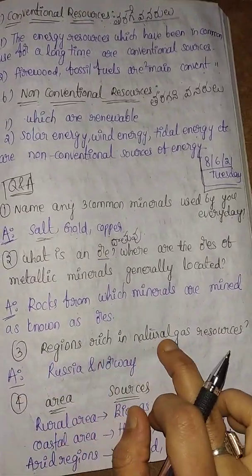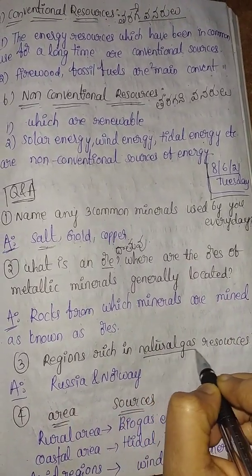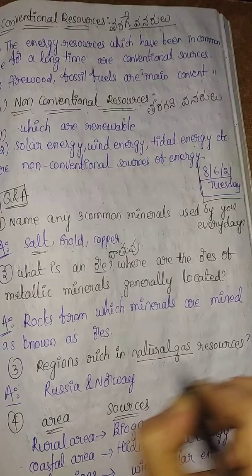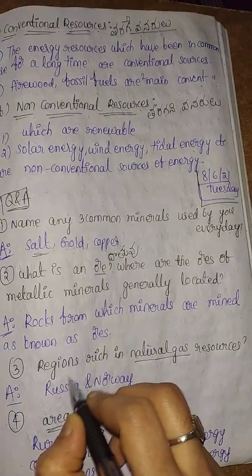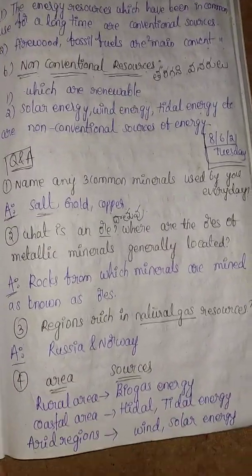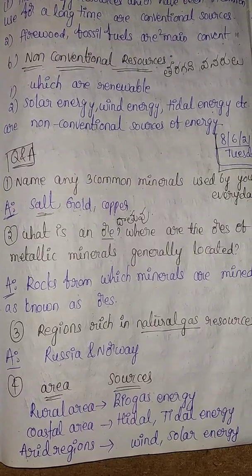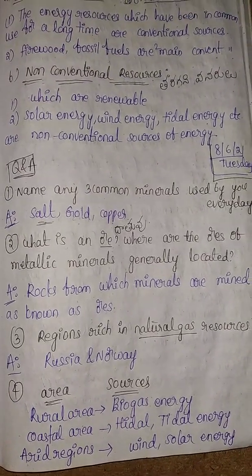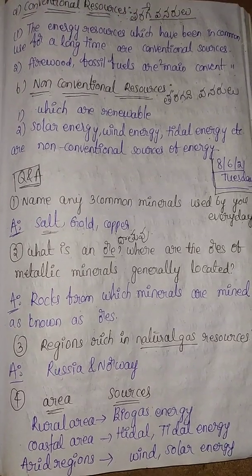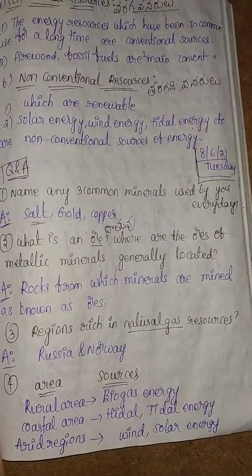Regions rich in natural gas resources — where is natural gas found? Sahaja vayu is rich in Russia and Norway. In rural areas, we have bio-gas energy. The coastal area has hydel energy and tidal energy.